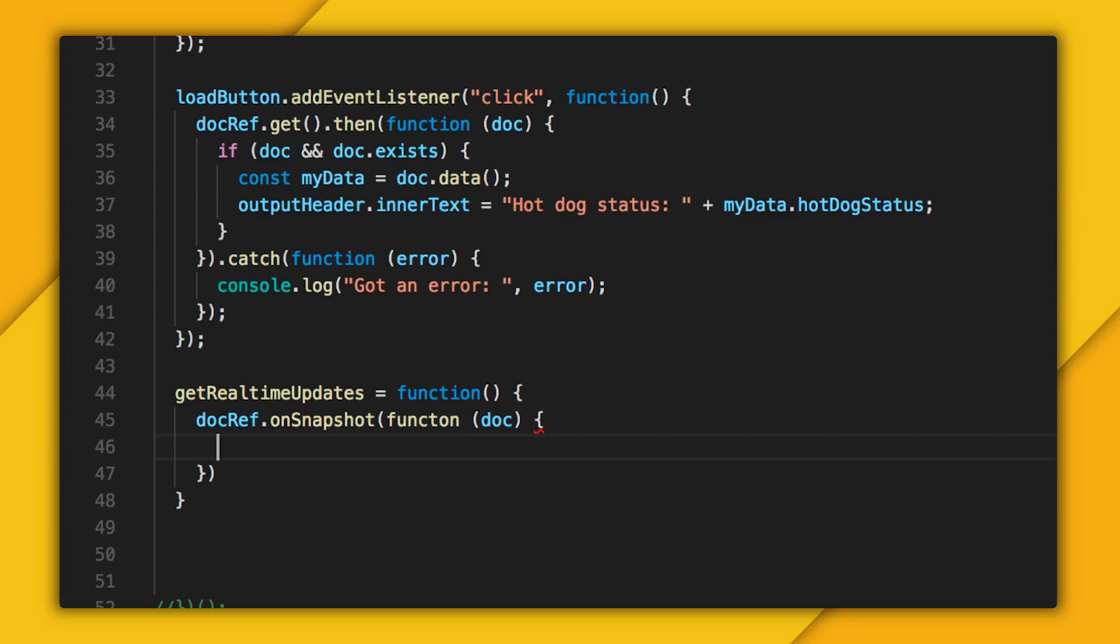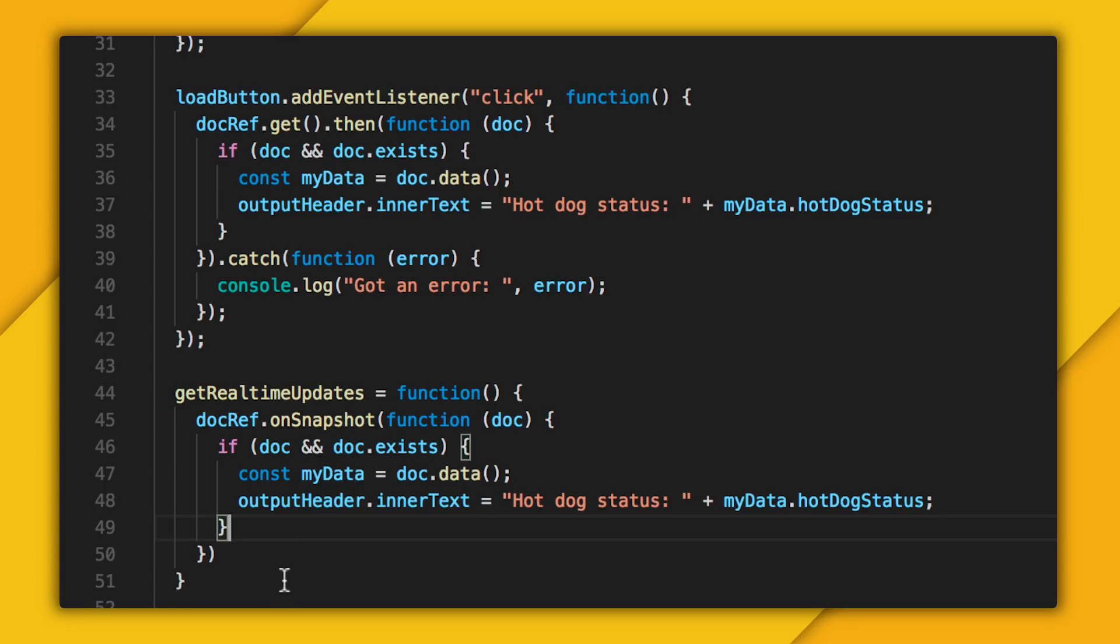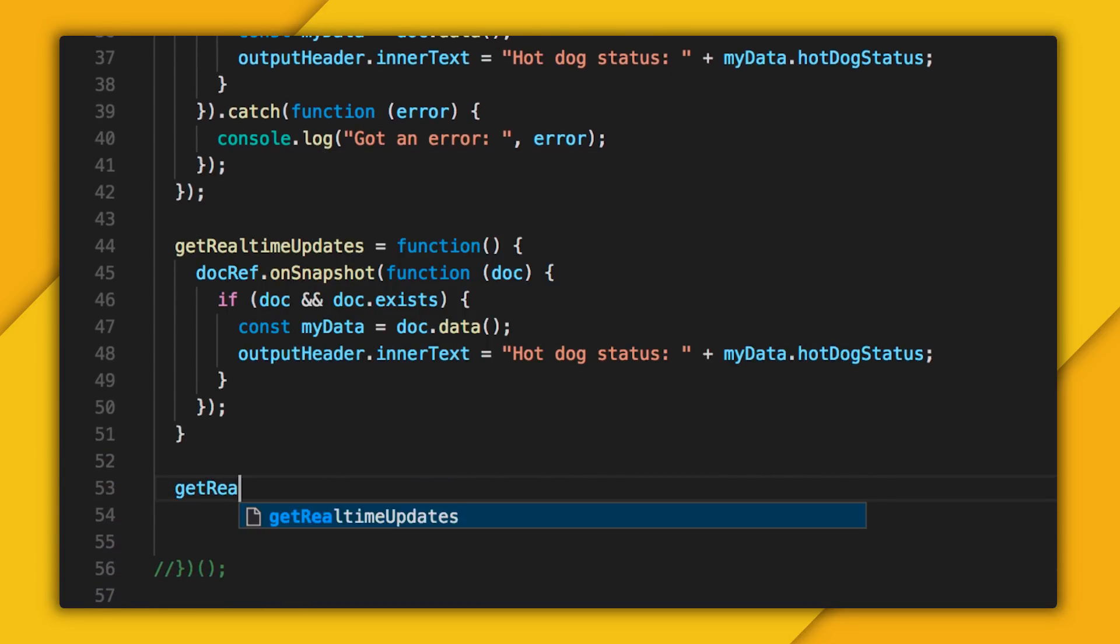Now this call takes in a callback function, which accepts the document snapshot as an argument, essentially just like my get call. So in fact, I'm just going to copy the exact same code for my get call into here to update my label. And well, that's it. We'll call get real time updates at the bottom of our script. And that should be all we need.